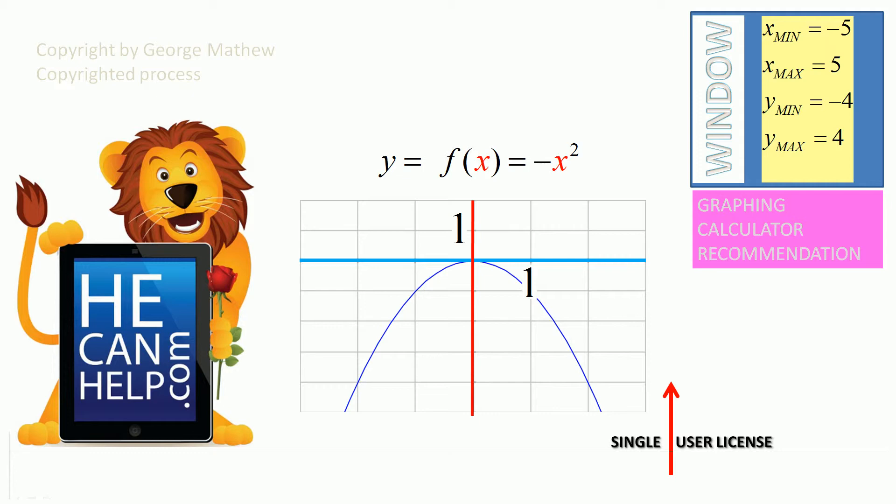When x equals 1, y equals negative 1. When x equals negative 1, y equals negative 1. When x equals 2, y equals negative 4. When x equals negative 2, y equals negative 4. So you see the graph is really symmetric about the y-axis.